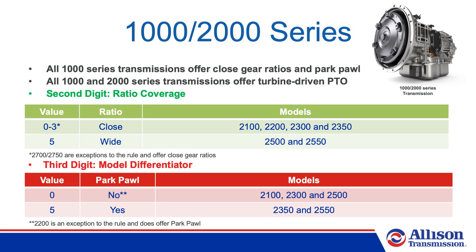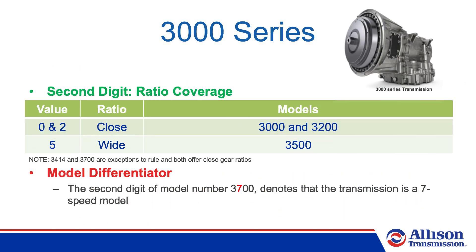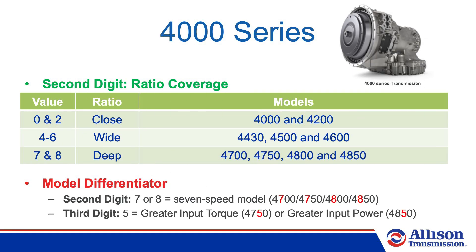The 2000 series transmissions also offer turbine-driven PTO and follow the general rules about ratio coverage, with a few exceptions. The 3000 series transmissions follow the rule of 0 and 2 as the second digits indicating close ratio, and a 5 indicating wide ratio, with some exceptions. The 7 in the 3700 denotes that the transmission is a 7-speed model. The 4000 series offers three gear schemes: close, wide, and deep.